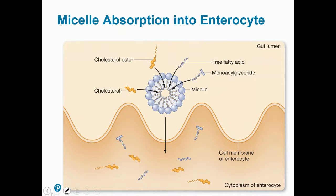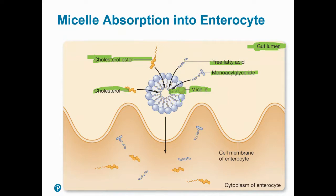Inside the lumen of the small intestine, the micelle packages all the end products of lipid digestion — cholesterol esters, cholesterol, free fatty acids, and monoglycerides. These are all fat-soluble compounds, so they get packaged together with end products of phospholipid digestion to form this hydrophilic-and-hydrophobic compound that can be absorbed into the enterocyte. Once inside the enterocyte, they dissociate again.